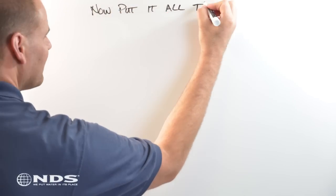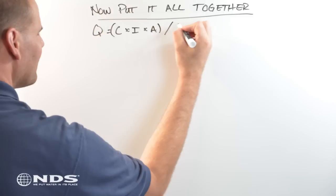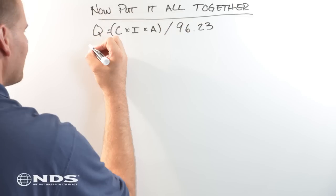Now, let's put it all together. Again, the rational method equation says that our storm runoff is equal to the runoff coefficient, C, times the rainfall intensity, I, times the runoff area, A, all divided by 96.23.